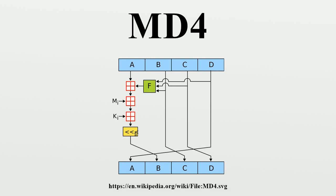The MD4 message digest algorithm is a cryptographic hash function developed by Ronald Rivest in 1990. The digest length is 128 bits. The algorithm has influenced later designs, such as the MD5, SHA-1, and RIPEMD algorithms.